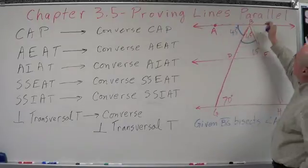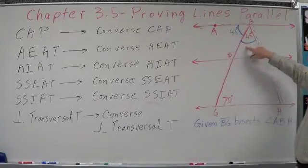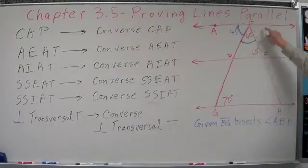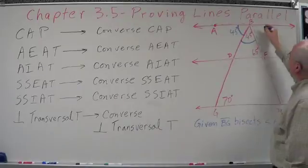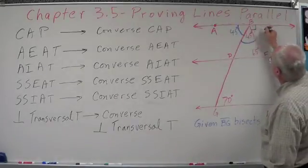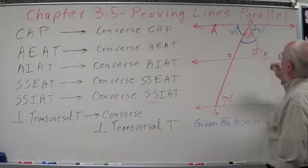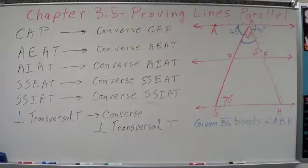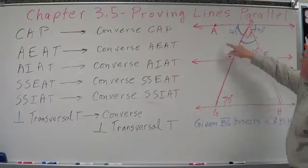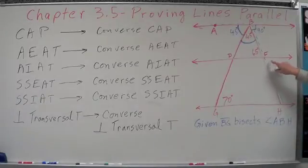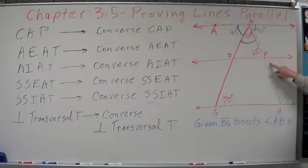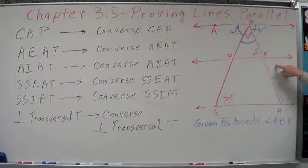Line AB forms a straight line. If this is 45 and this is 45, what's this angle here? 45 plus 45 is 90, so this right here has to be a right angle — 90 degrees. Now, if line AB and DF are parallel, this corresponding angle would also be 90. But it's not. What's the relationship between this angle and this angle? The vertical angle theorem says they're vertical angles. What do we know about vertical angles? They are congruent — same measure. So that has to be 65.